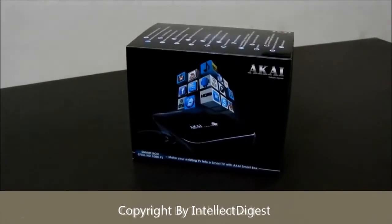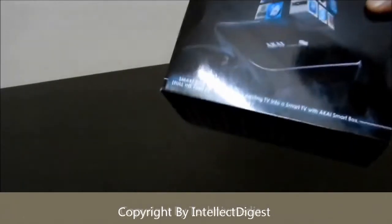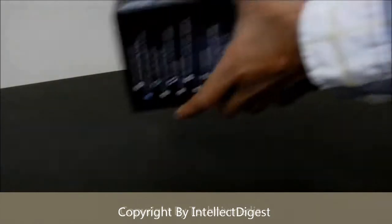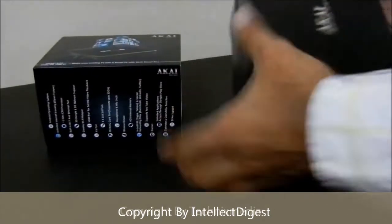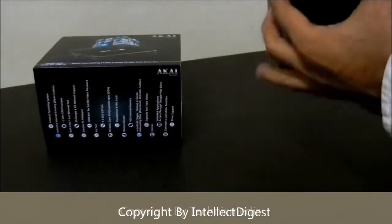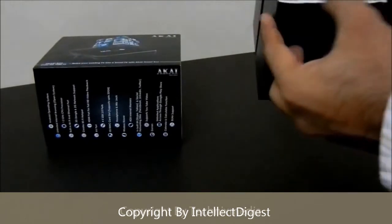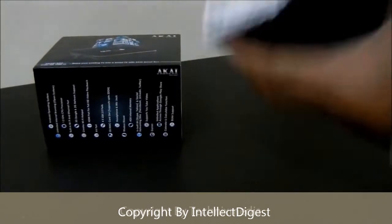Today I am going to give you a quick unboxing of the Akai Smart Box Android TV. Let us take this device out of the covers. This is a black box. This is the sticker which tells the price and box contents.